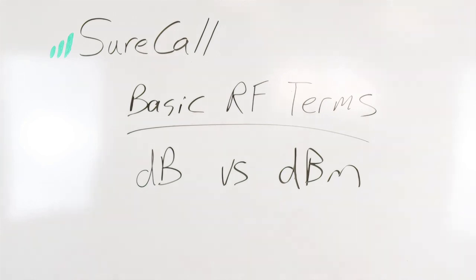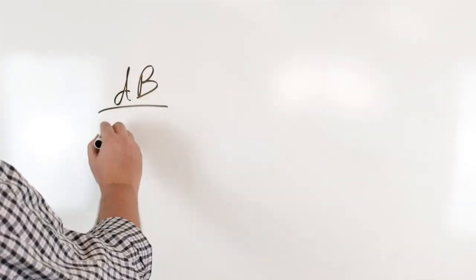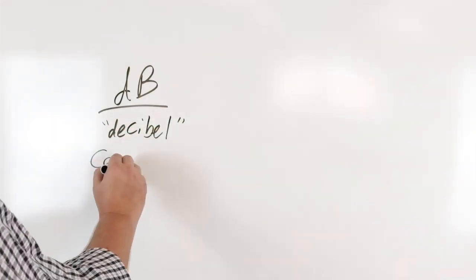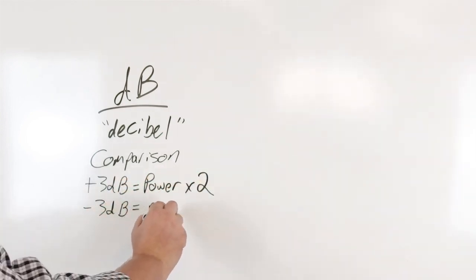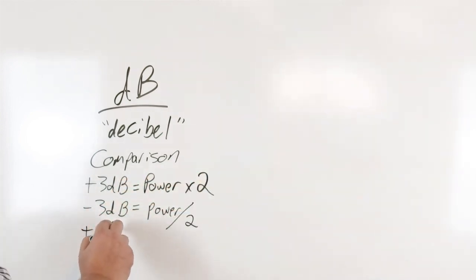First let's talk about dB and dBm. dB or decibels is typically used when talking about gain or loss in a system. It's a comparison between two numbers and has a complicated mathematical process that we will not be covering for time's sake.